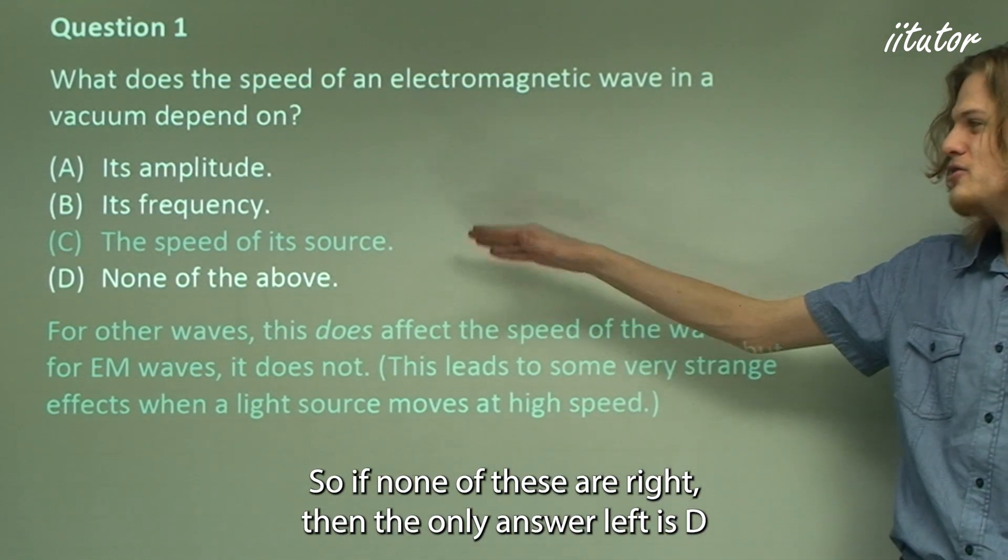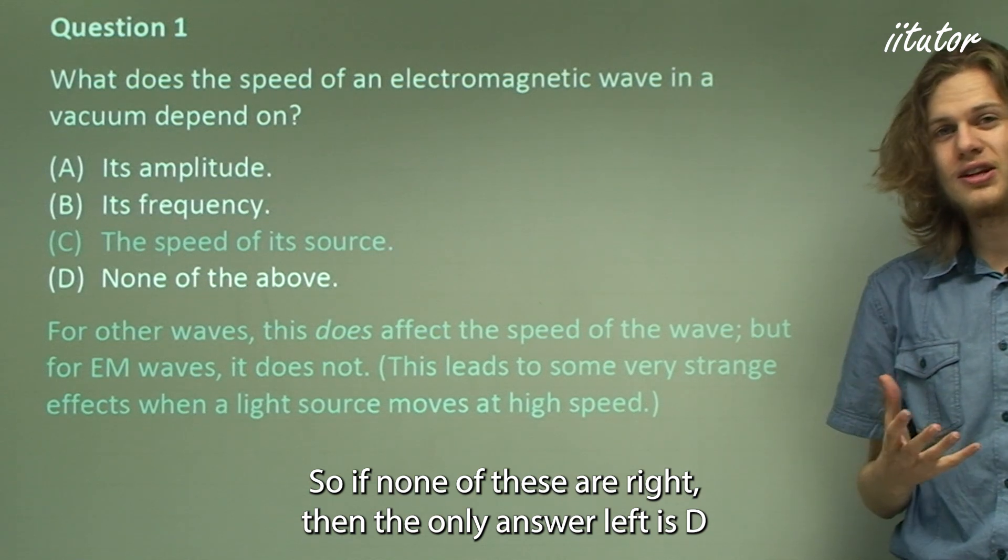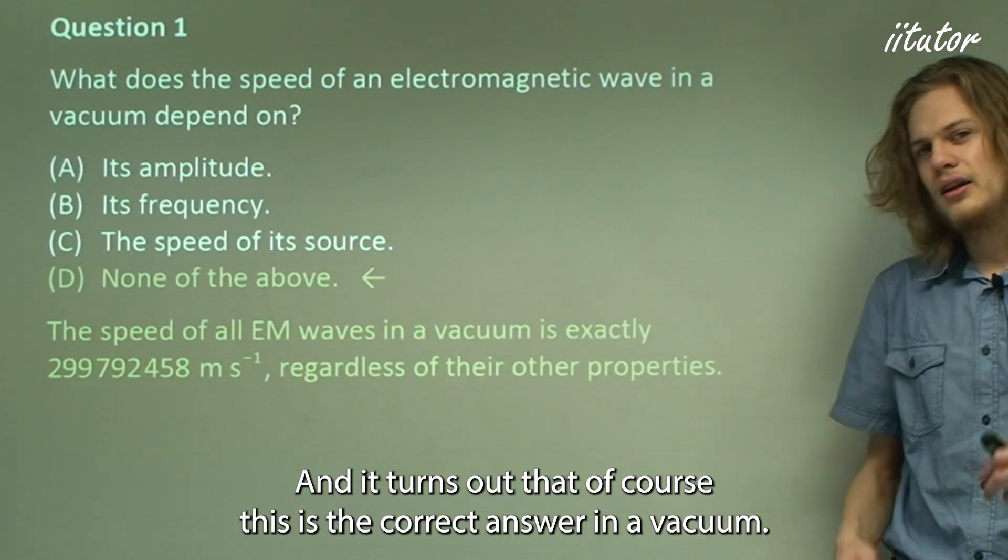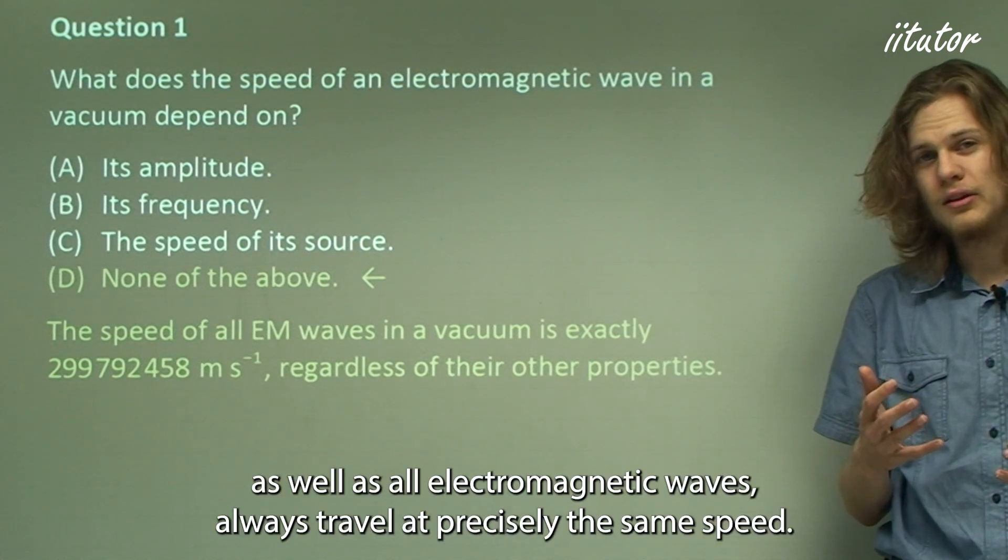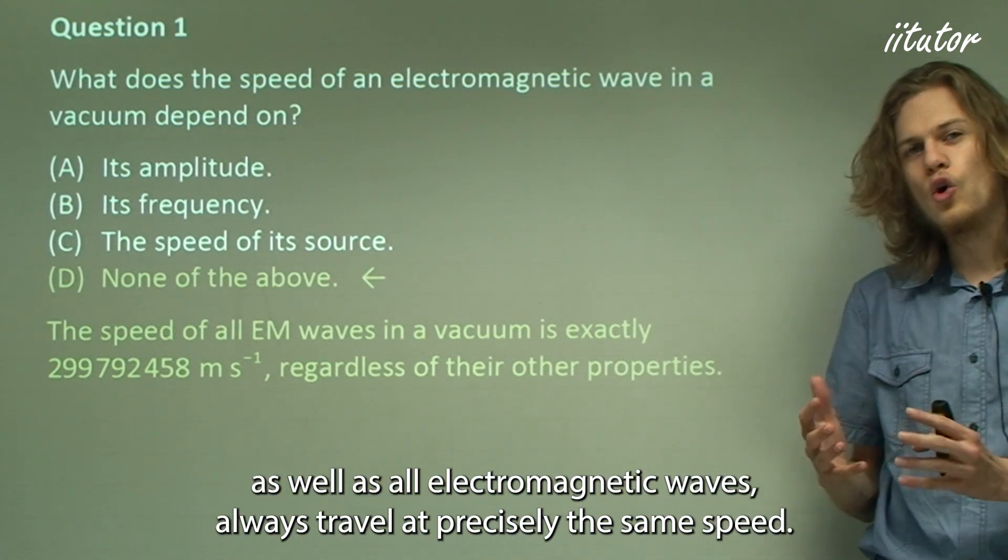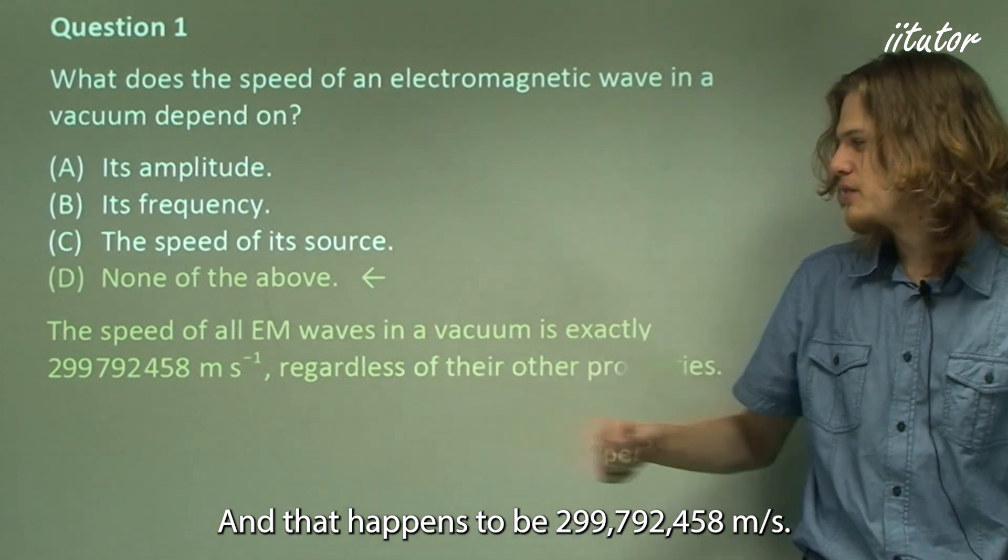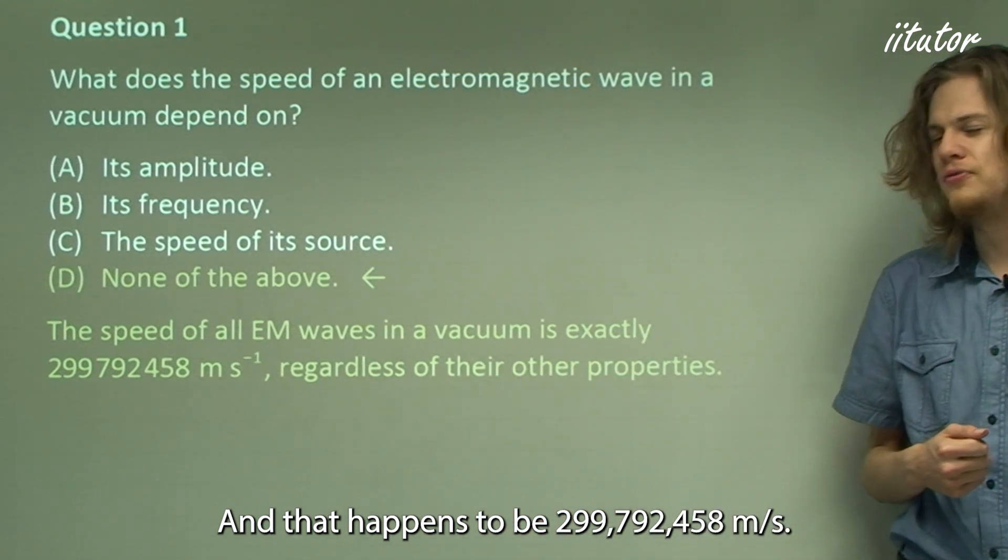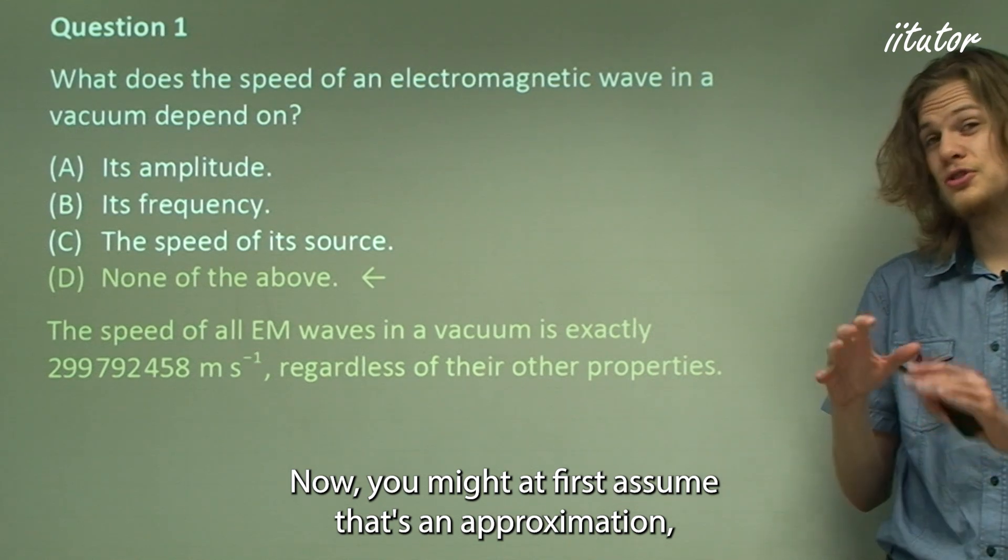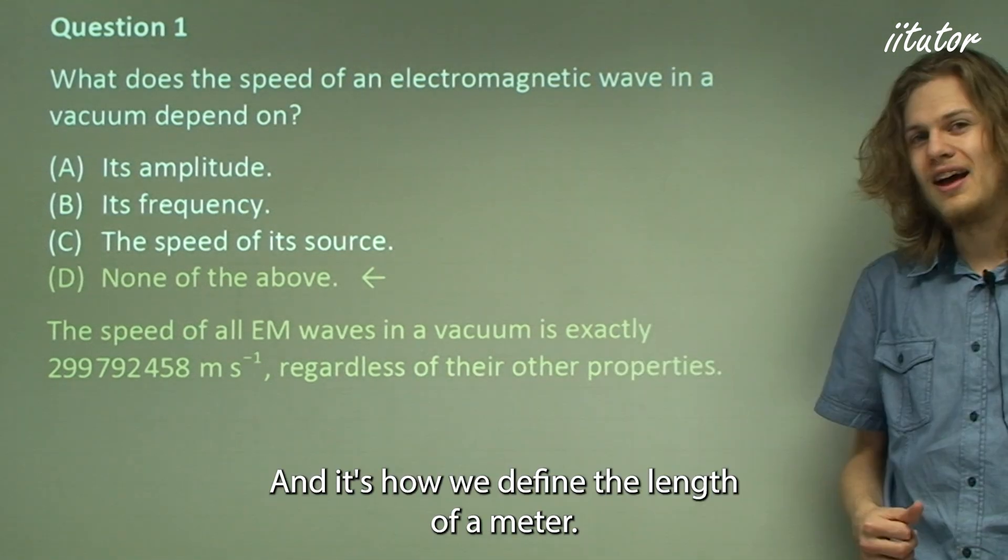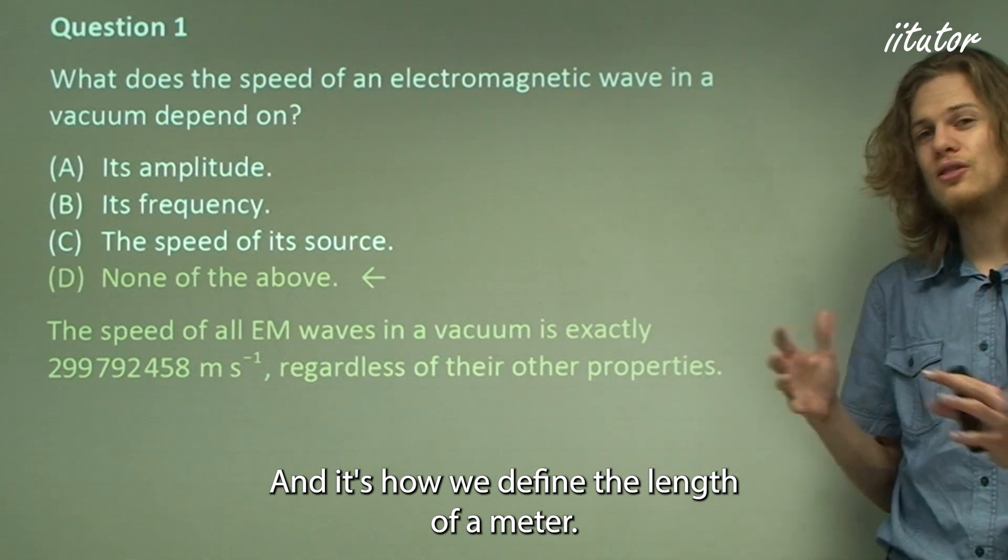So if none of these are right, then the only answer left is D, none of the above. And it turns out that of course this is the correct answer. In a vacuum, beams of light, as well as all electromagnetic waves, always travel at precisely the same speed. And that happens to be 299,792,458 meters per second. Now you might at first assume that's an approximation, but in fact this is an exact number and it's how we define the length of a meter.